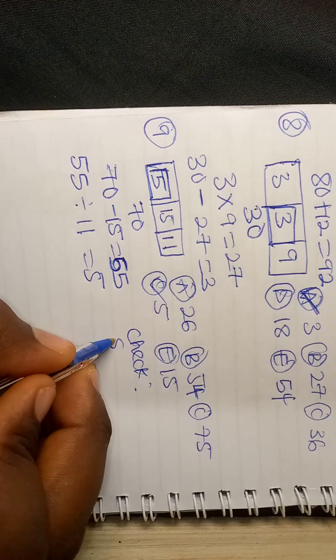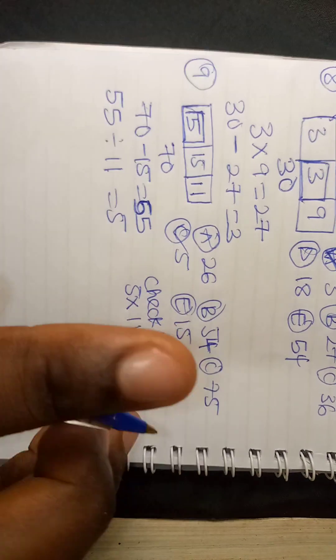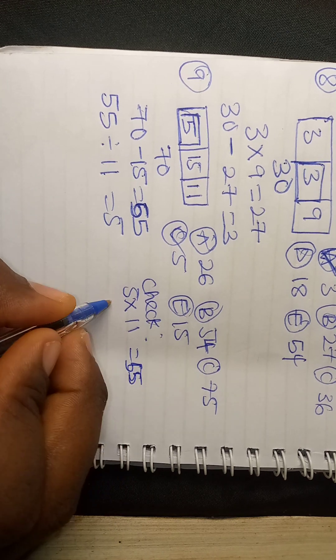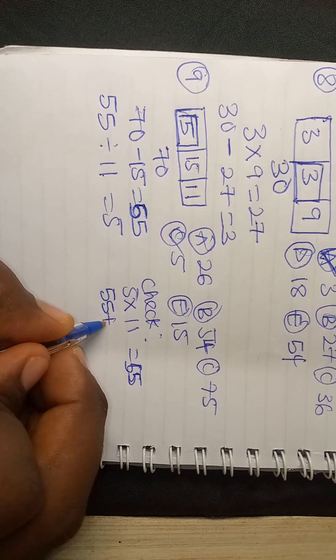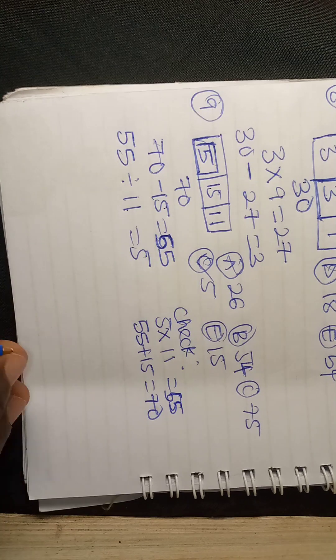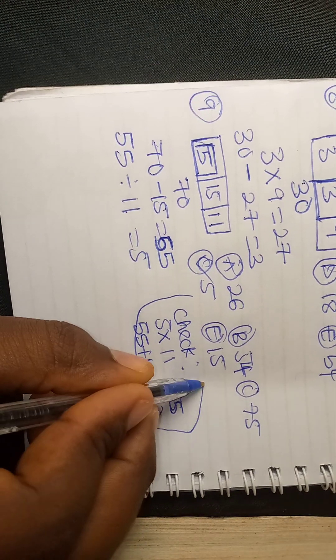We can check by doing our method: this 5, let's check. 5 times 11 which is 55, then 55 plus 15 is 70. So we are correct with the check.